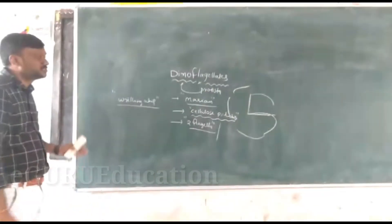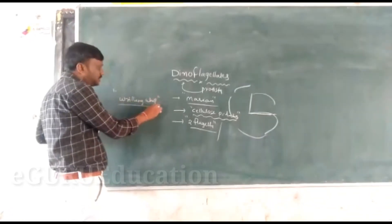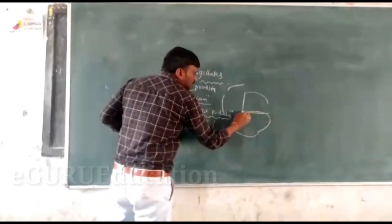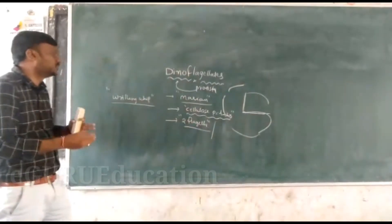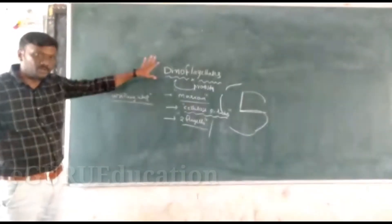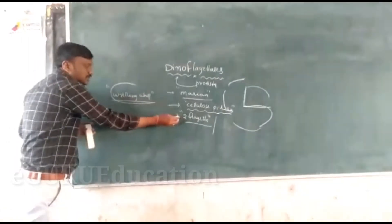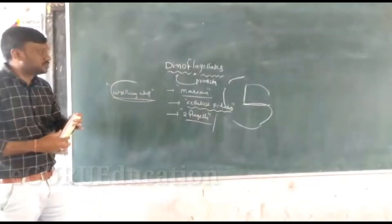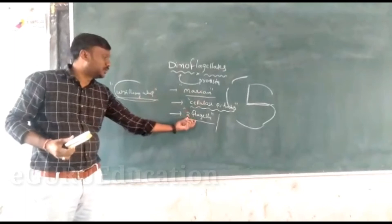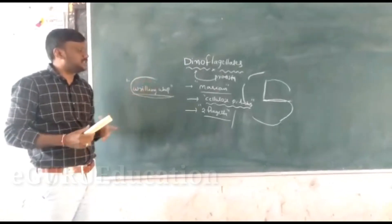What is whirling? These dinoflagellates are moving in a round-like structure — moving round and round continuously. This type of movement is called whirling. Why? Because two flagella are present: one is horizontal and one is vertical. So the movement is round again and round. This is the most important point of dinoflagellates. Only dinoflagellates participate in whirling movement. These are having in marine water, cell wall is made up of cellulose plates, and two flagella are available.